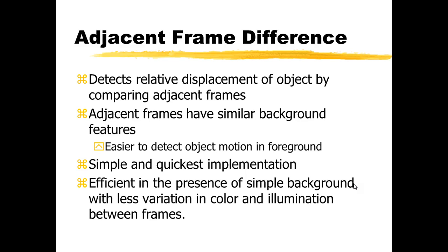The most efficient algorithm for motion detection is the adjacent frame difference algorithm. This algorithm detects the displacement of objects by comparing two frames. The two frames, because they are captured with a very small temporal difference, will have very similar background features, hence easily highlighting the motion of the object in the foreground. It is the simplest and quickest implementation for motion detection and performs the most efficient detection because the change in the background is very less in terms of color and illumination.